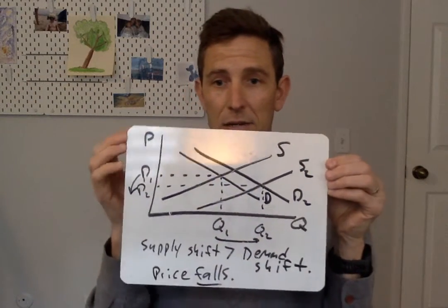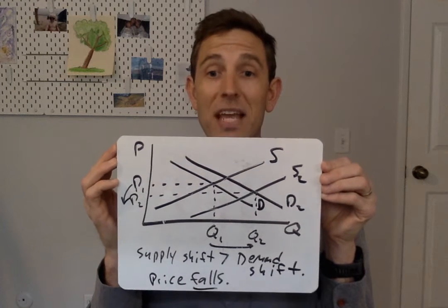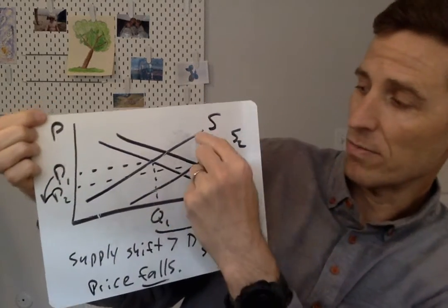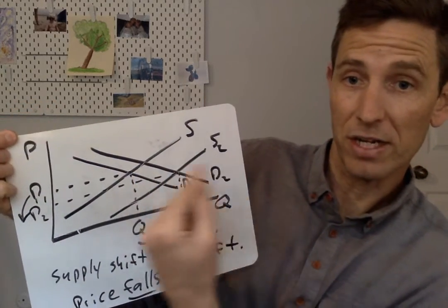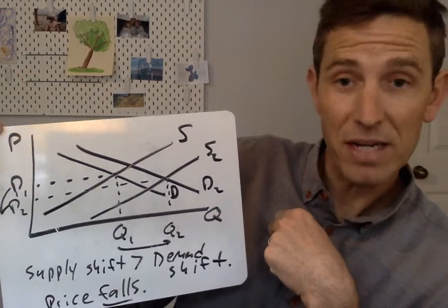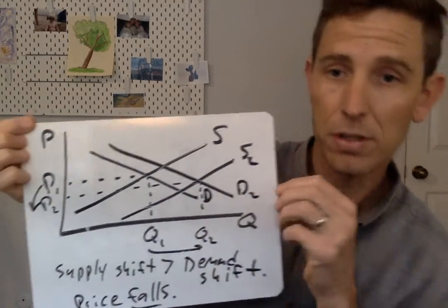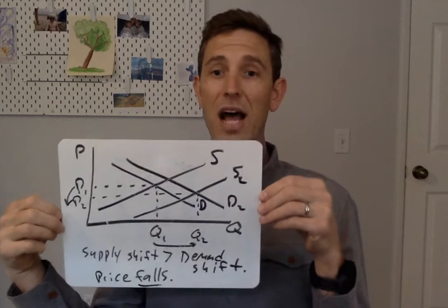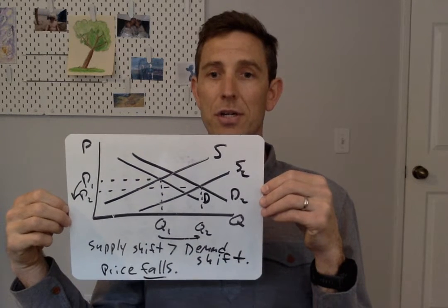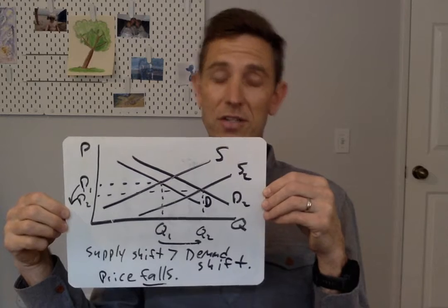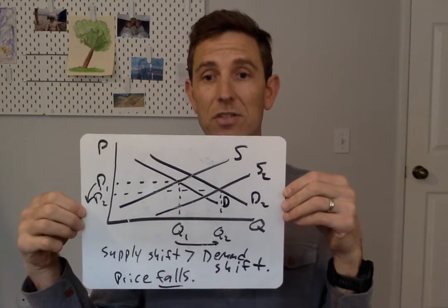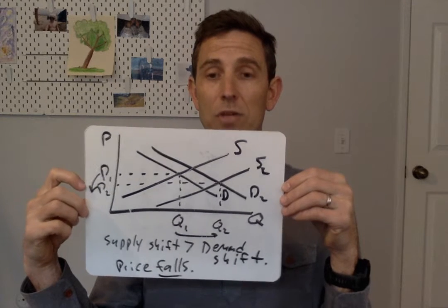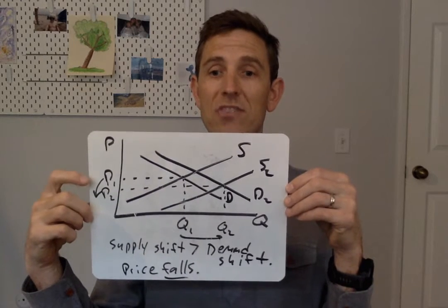On our second graph, we're showing those same exact two shifts. The supply curve increases, shifting to the right, going from S to S2. And at the same time, the demand curve increased from D1 to D2. Now notice, on this second graph, we're seeing that the supply shift is bigger in nature than the demand shift. Supply increased and increased a lot; demand increased and increased only a little. Look at what happens to the price in this case — when you make that set of assumptions, the price falls.